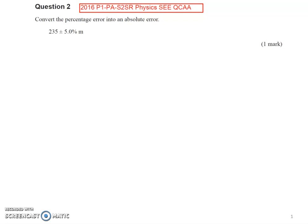Question 2. Convert the percentage error into an absolute error. The value is 235 plus or minus 5% unit in metres.